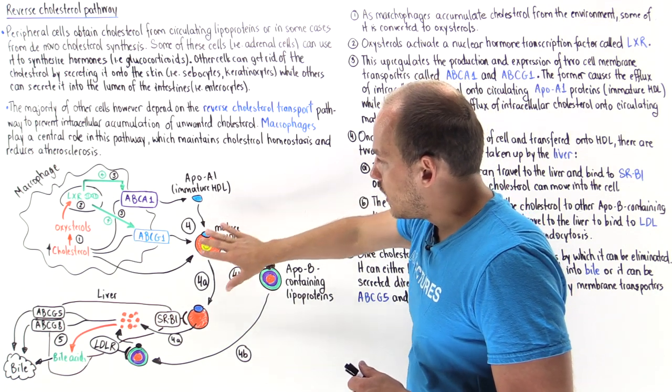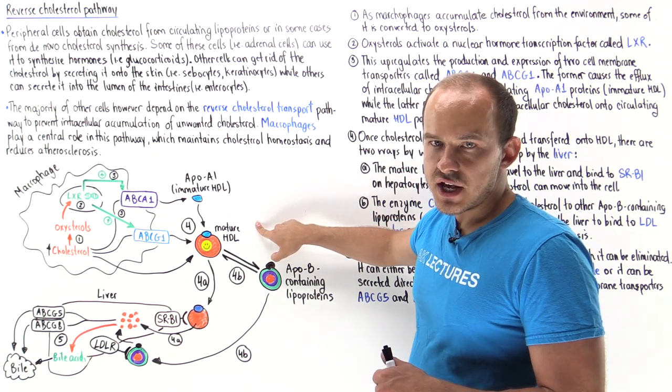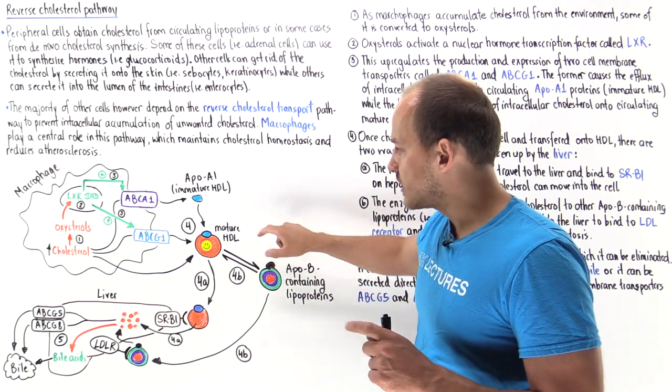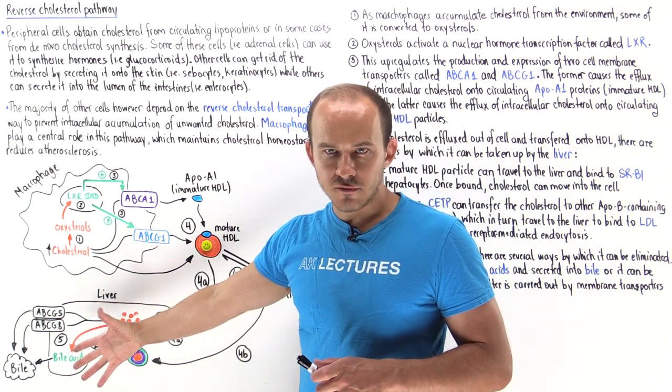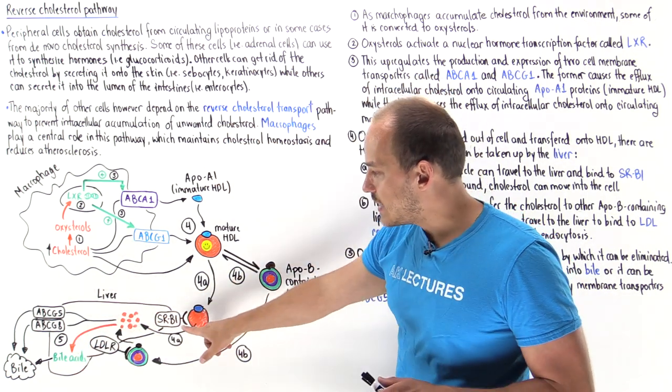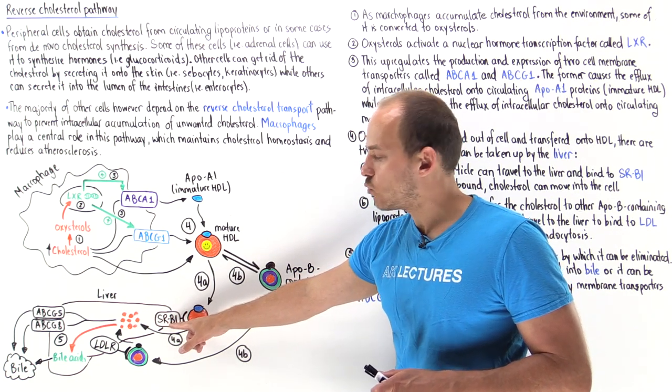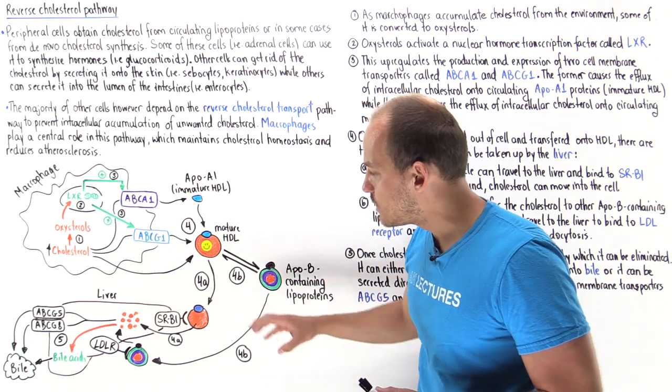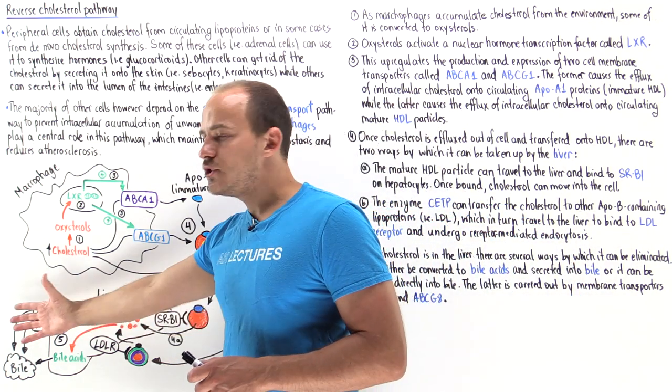Once the cholesterol ester is within the core of the mature HDL particles, one of two things can happen. Either the mature HDL particle travels directly onto liver cells, it associates and binds onto the scavenger receptor type B1 receptor, so SRB1, and once bound, the cholesterol can basically move into the cell.